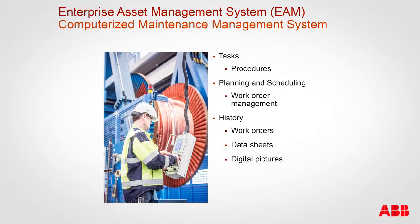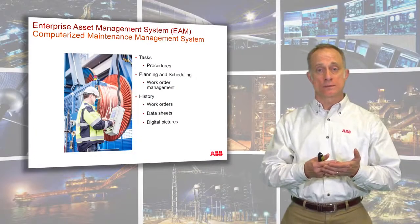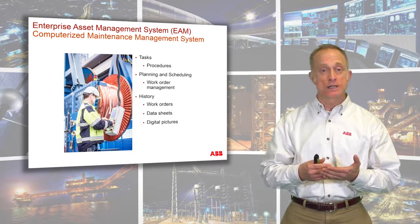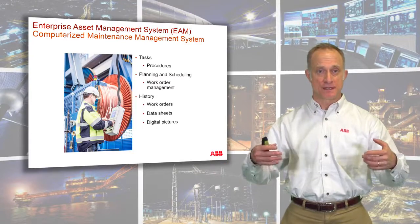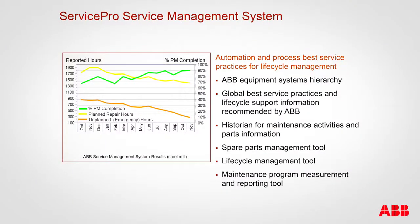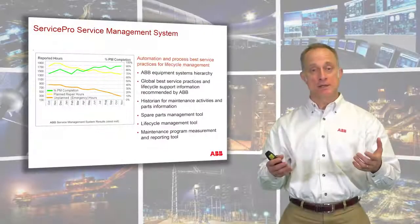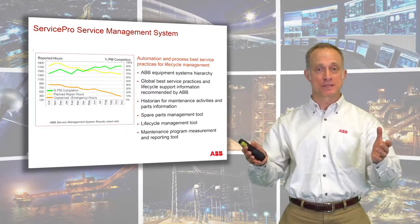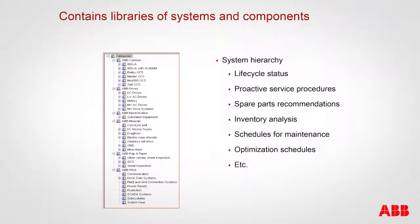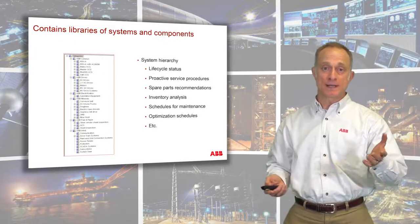Finally, implement everything into an enterprise asset management system, also known as a computerized maintenance management system — software where work orders can be implemented, preventive maintenance routines stored, and planning and scheduling managed. ABB has its own CMMS for ABB equipment called ServicePro. ServicePro is uniquely designed for ABB equipment and processes and comes already with a hierarchy of systems, subsystems, and components, as well as preventive maintenance routines already embedded — many of which are a direct result of failure modes and effects analysis for ABB asset classes.